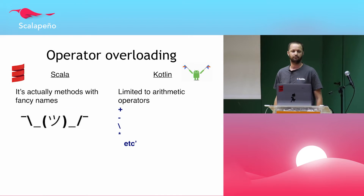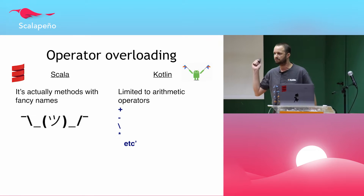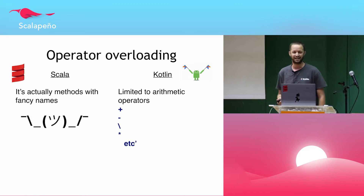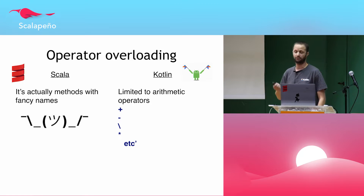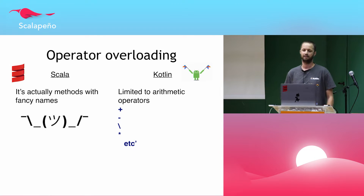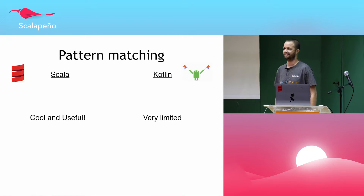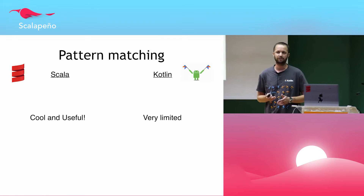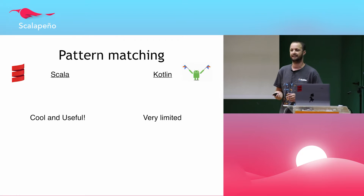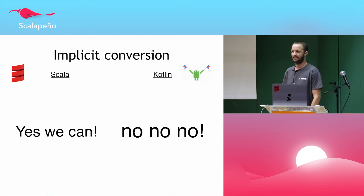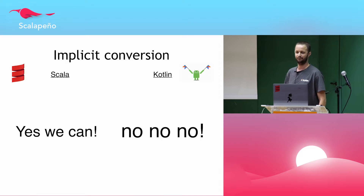Next is operator overloading. With Scala you can do everything you want, and I've seen some crazy stuff in our codebase at Outbrain. In Kotlin it is very limited — it's easier to search for in Google because method names are like 'minus' and 'plus', and it's limited only to arithmetic operators. Next is pattern matching — this is actually something I miss from Scala, it's a really cool feature. In Kotlin we have the 'when' expression, which is like an enhanced switch statement from Java. And implicit conversions will not be entering the language.